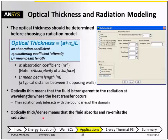If the optical thickness is large, then we say that the system is optically thick, and that means that the fluid absorbs and re-emits radiation. Examples of fluids that behave like this are combustion products or molten glass.